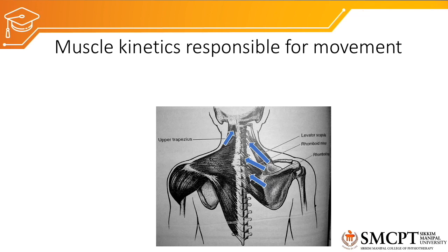Hello everyone. In the previous class we discussed about the static stabilization of the glenohumeral joint. We also covered the arthrokinematics and osteokinematics of the glenohumeral joint and the other three joints. Today we will discuss about the muscles responsible for creating movement, that is muscle kinetics responsible for movement or muscle force. We will also discuss about the dynamic stabilization of the shoulder complex.